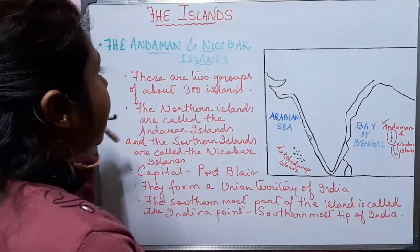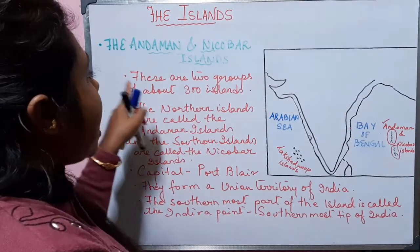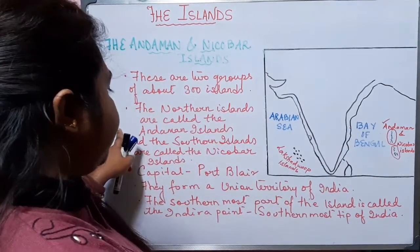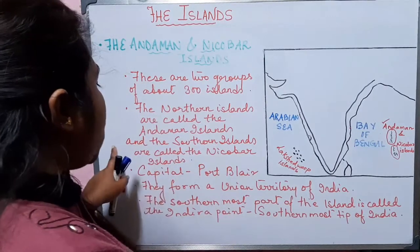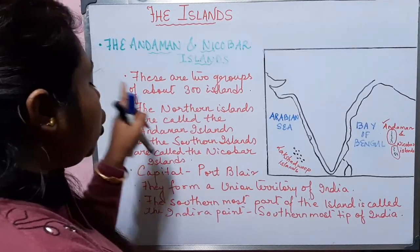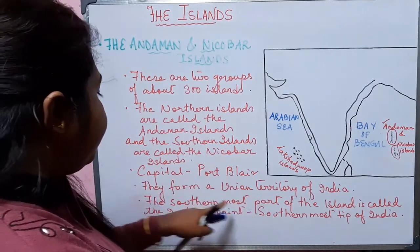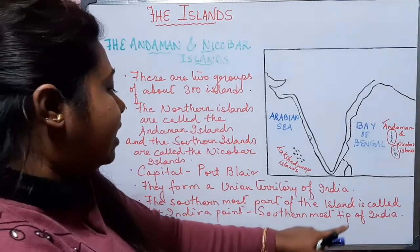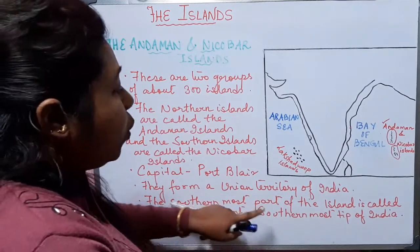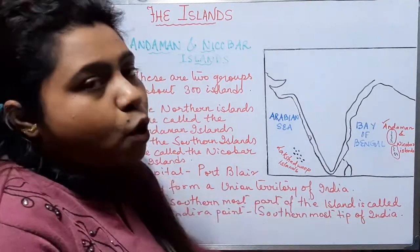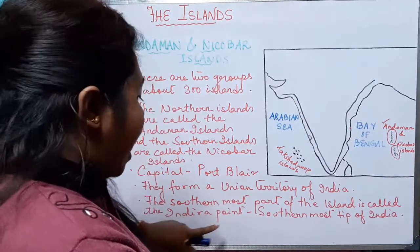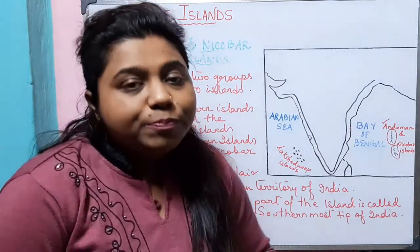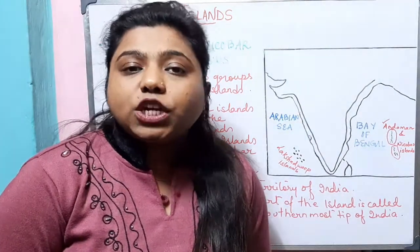To summarize what we have learnt about the Andaman and Nicobar Islands: these are two groups of about 300 islands. The northern islands are called the Andaman Islands and the southern islands are called the Nicobar Islands. The capital is Port Blair. They form a union territory of India. The southernmost part is called Indira Point, which has got submerged underwater due to the tsunami. Now let us move ahead with the Lakshadweep Islands.